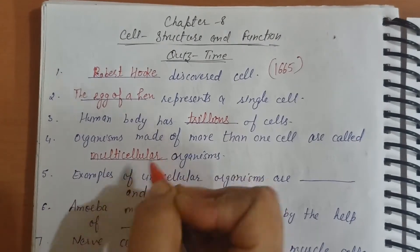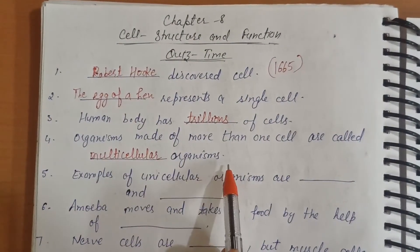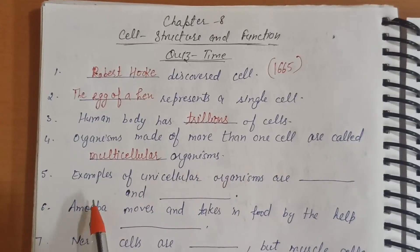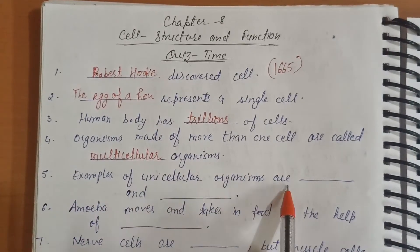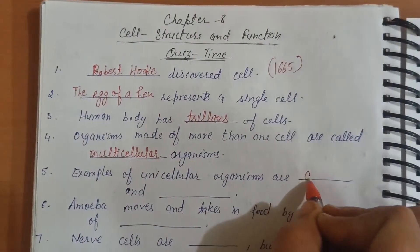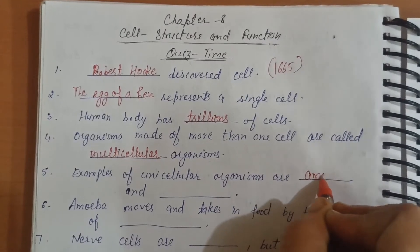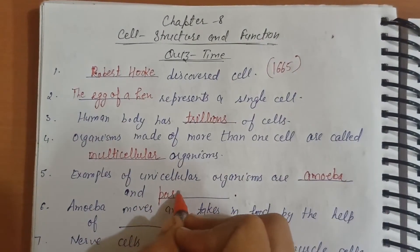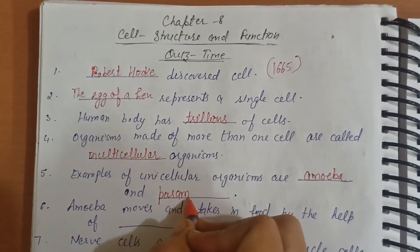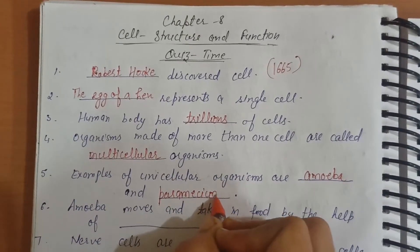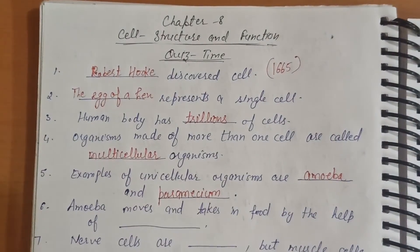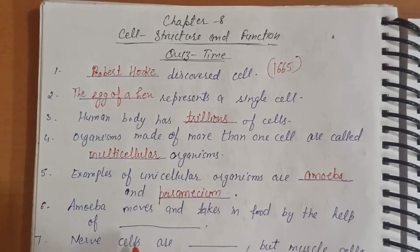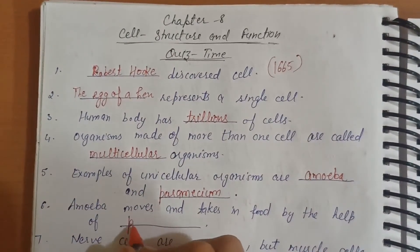Fourth, organisms made of more than one cell are called multicellular organisms, and organisms made of one cell are called unicellular organisms. Fifth, examples of unicellular organisms are Amoeba and Paramecium.